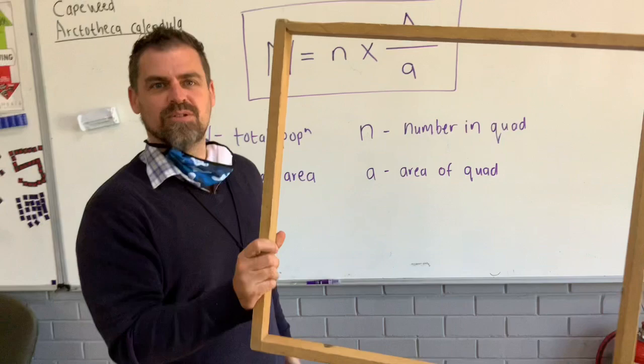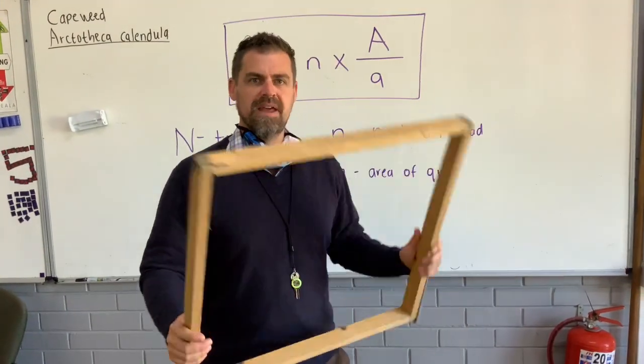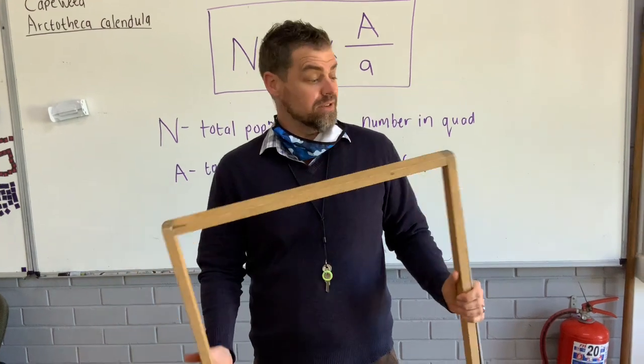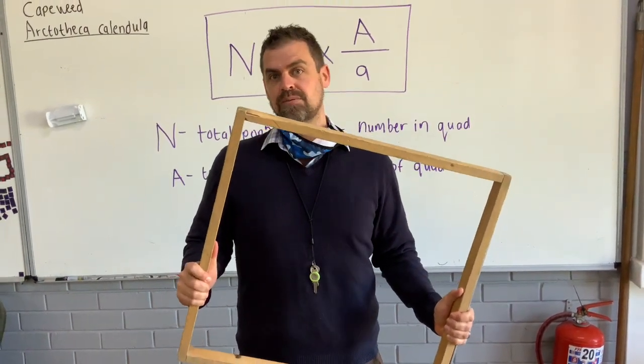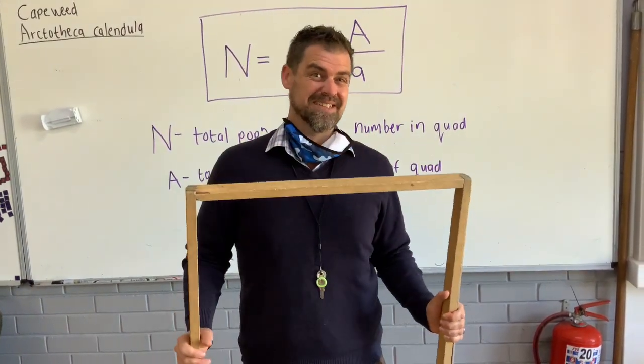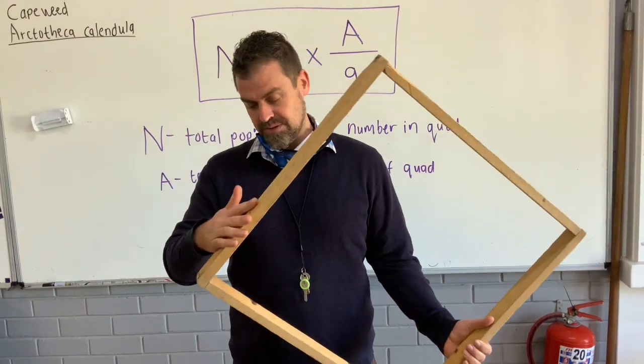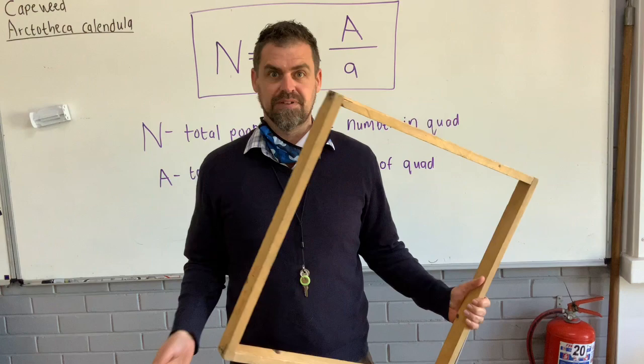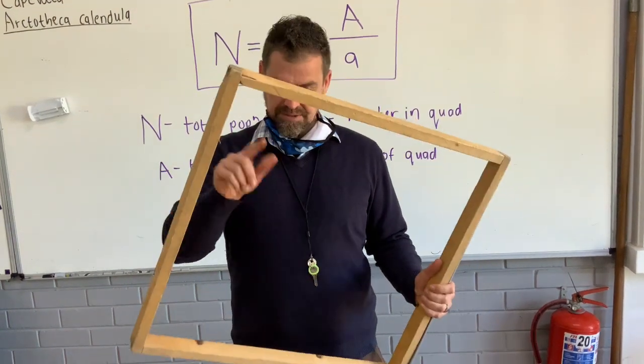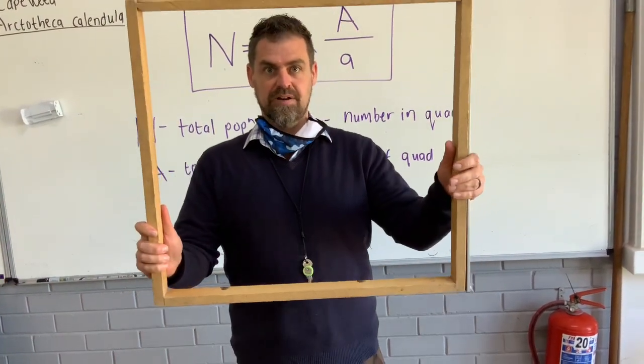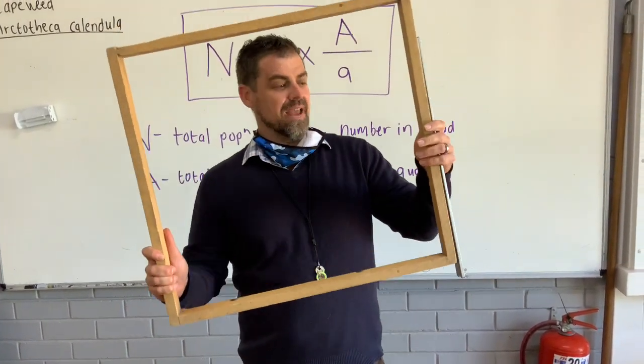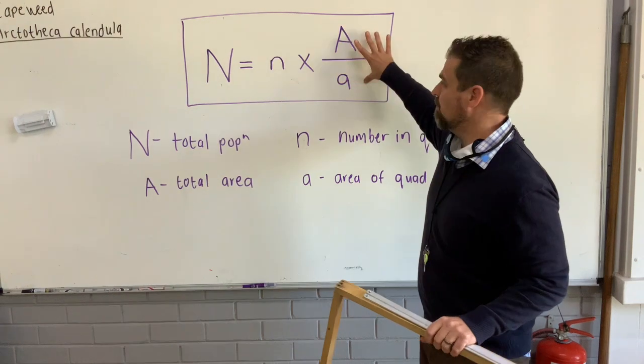So this is a quadrat and it's a method we can use or a tool that we can use as biologists to actually quickly get some information without having to count every single individual. So what we do is we place a quadrat pretty randomly in the field of capeweed and we count how many individuals are in that particular area. And then we repeat that maybe a couple of times to improve the reliability and we can then use this formula.